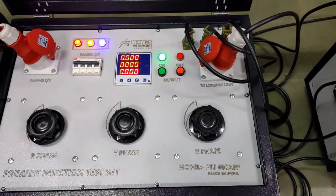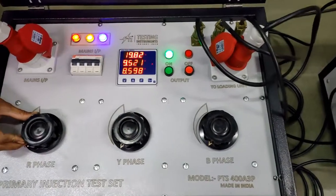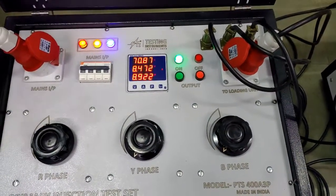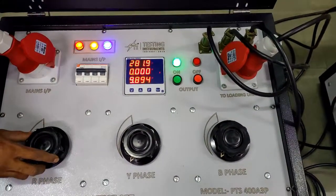For trial purpose we will increase any of phase. Let's go to R phase. You can see by rotating knob of R phase variac to clockwise direction, the output of R phase is increasing gradually.